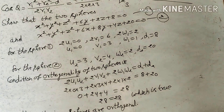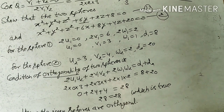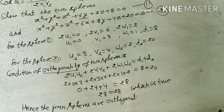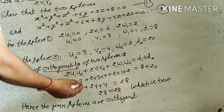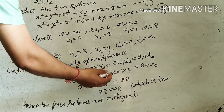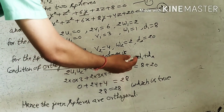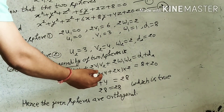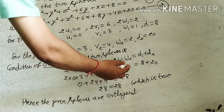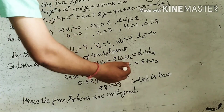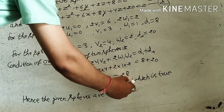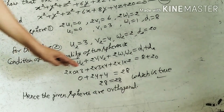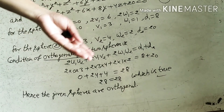Now check the condition for orthogonality: 2U1U2 + 2V1V2 + 2W1W2 = D1 + D2. Substituting: 2(0)(3) + 2(3)(4) + 2(1)(2) = 8 + 20. This gives 0 + 24 + 4 = 28, and 8 + 20 = 28. Both sides are equal, so the condition is satisfied. Hence the given spheres are orthogonal. If this condition is satisfied they will be orthogonal, otherwise they are not.